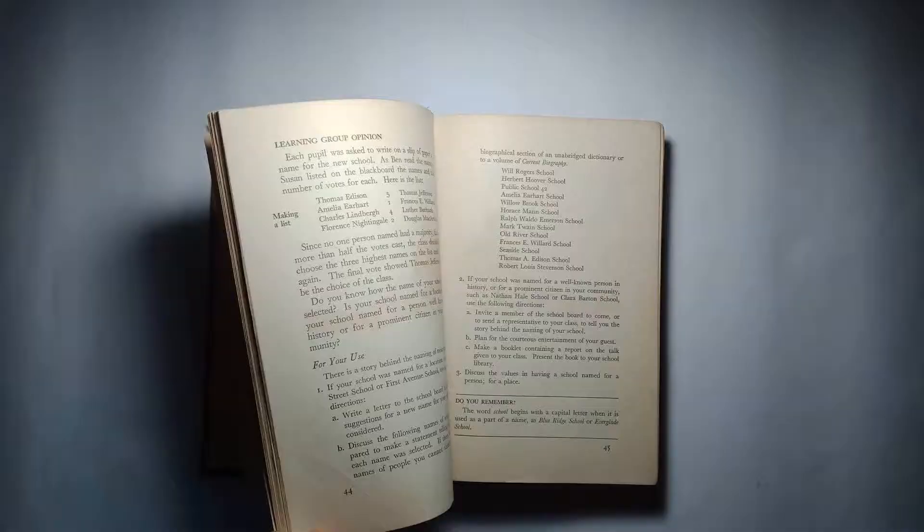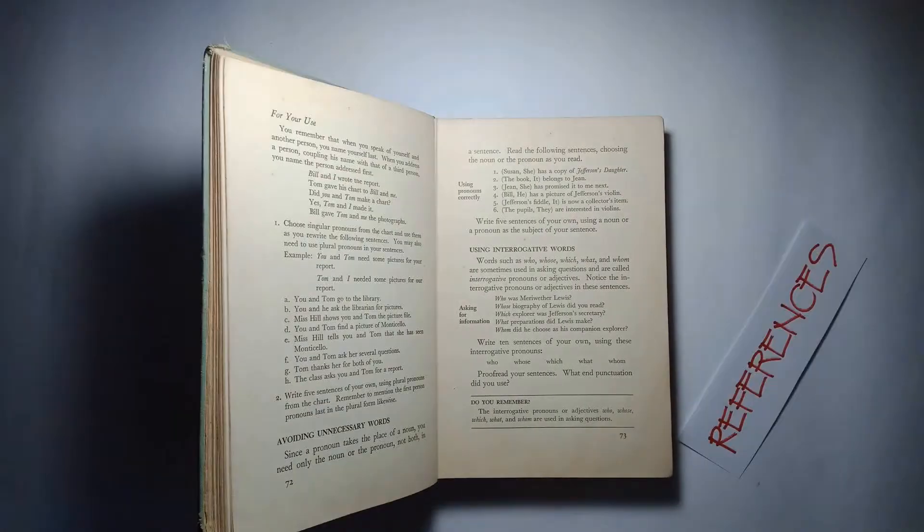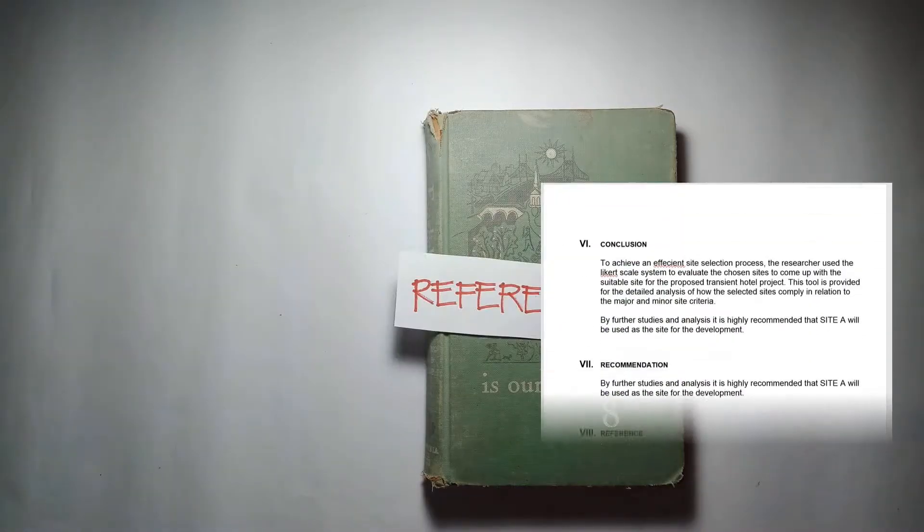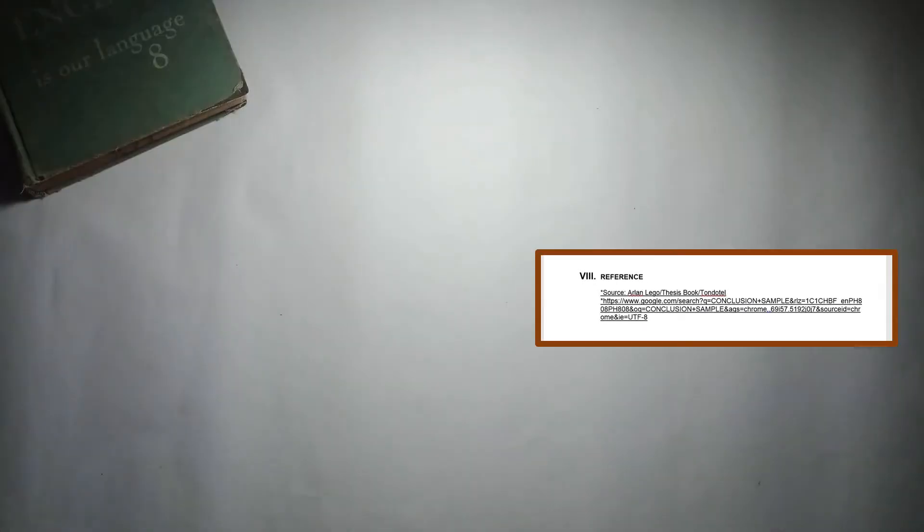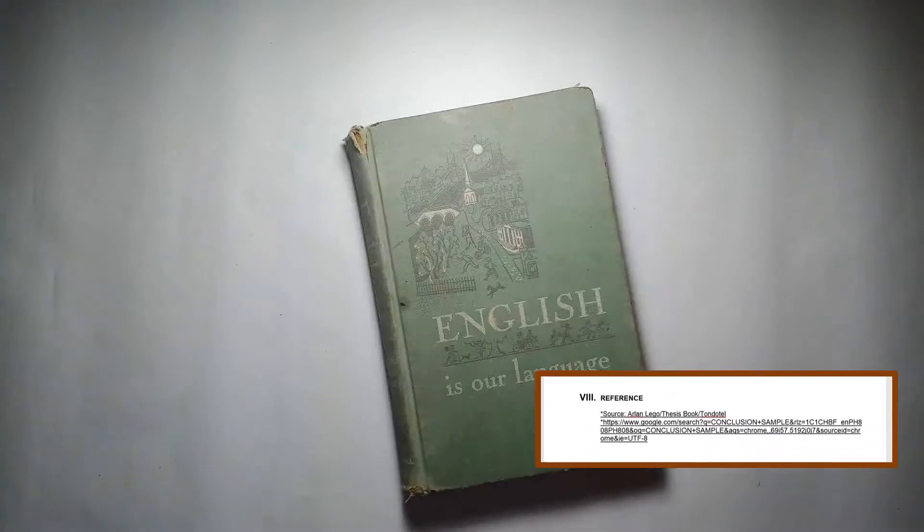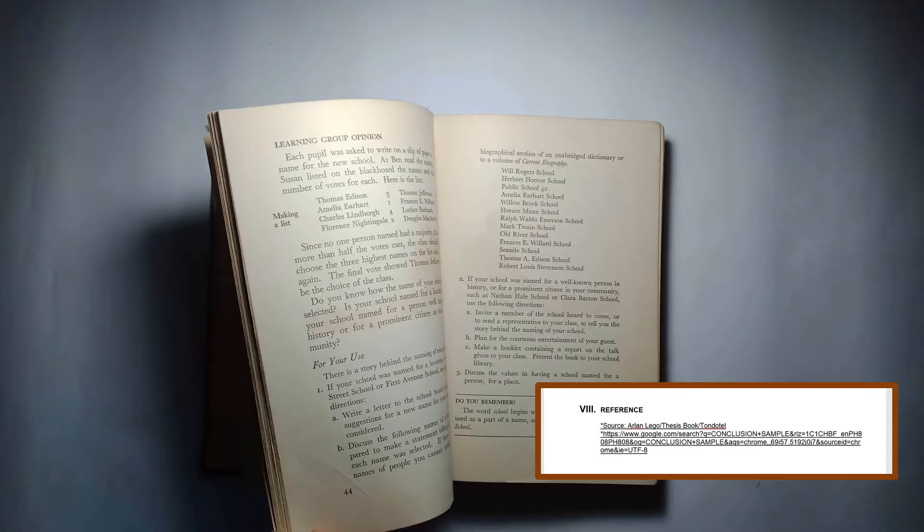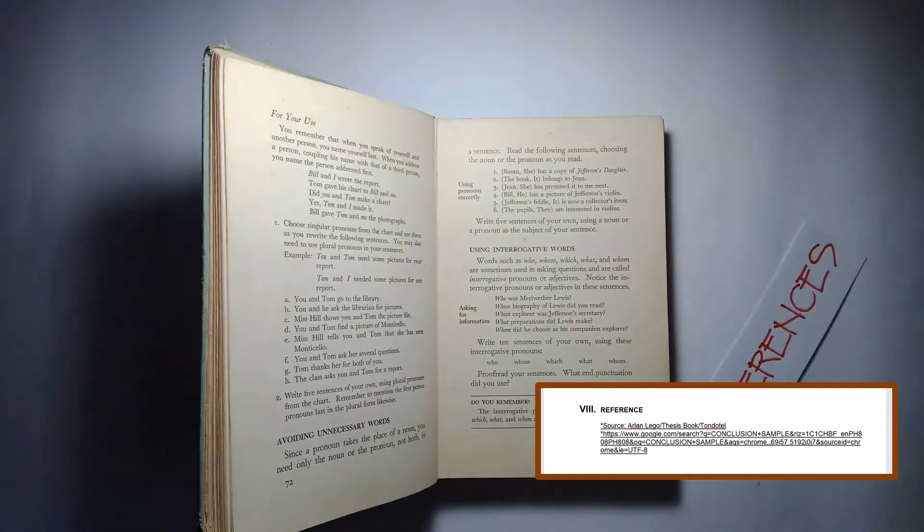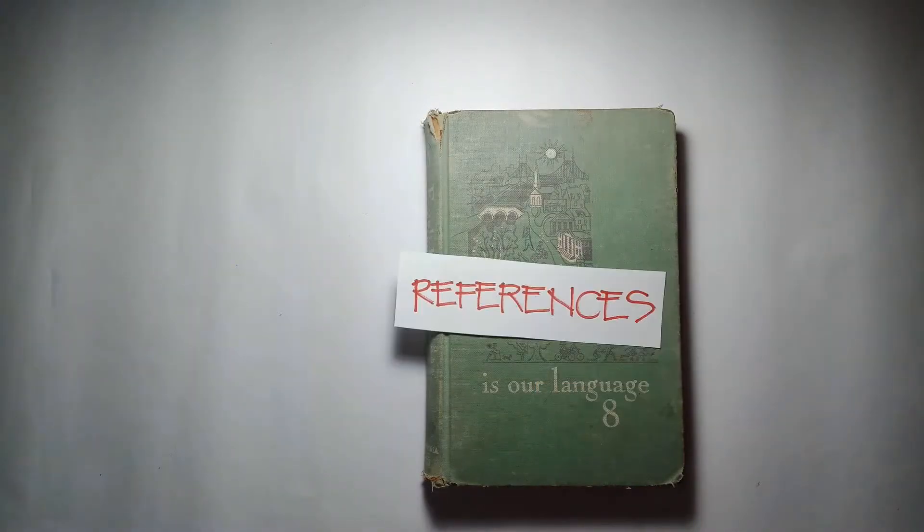In the reference section, you need to list all the materials that you use in your research. You may have quoted some text somewhere, so it is at this point that you need to list it so it does not become a plagiarized work. When you write the reference, you acknowledge that the content that you use is from a certain source.